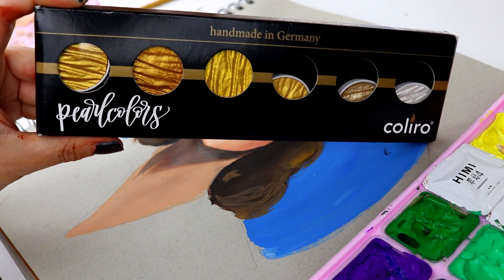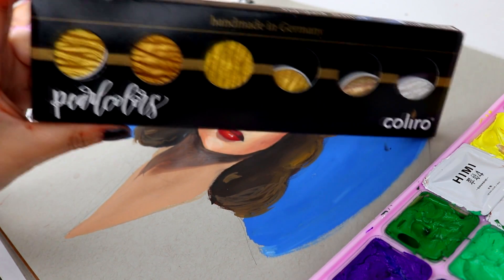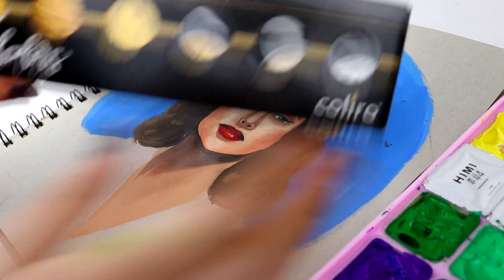Now gouache isn't the only thing that I'm trying out. I'm also going to add in this mica pigment which is so pretty even though it came broken.